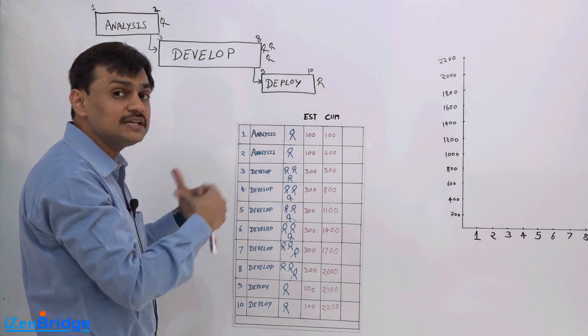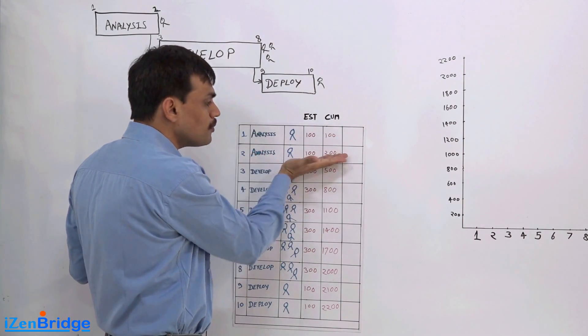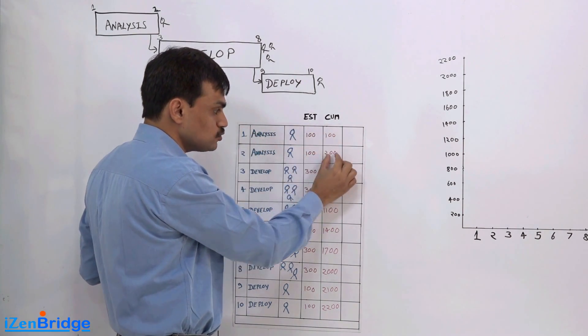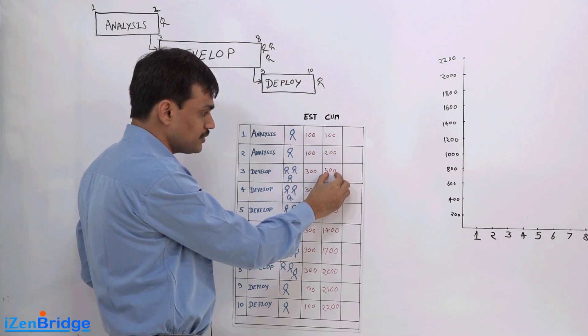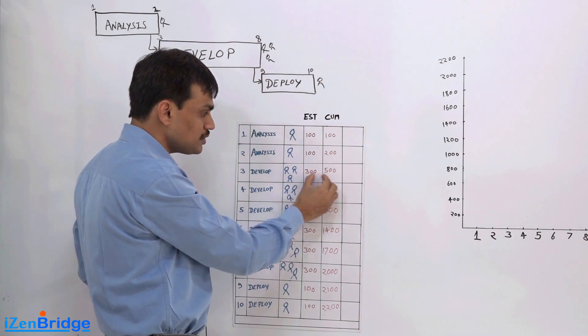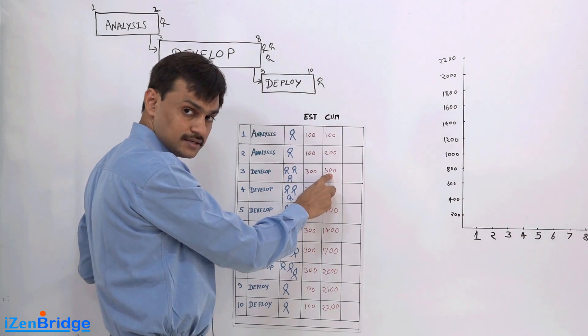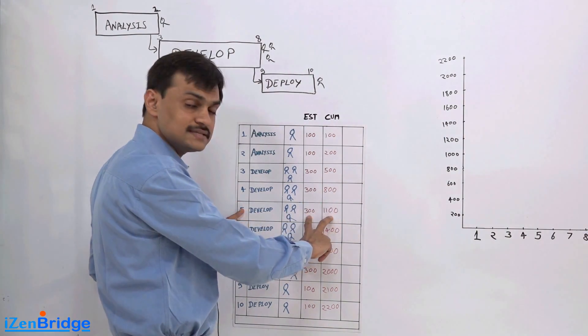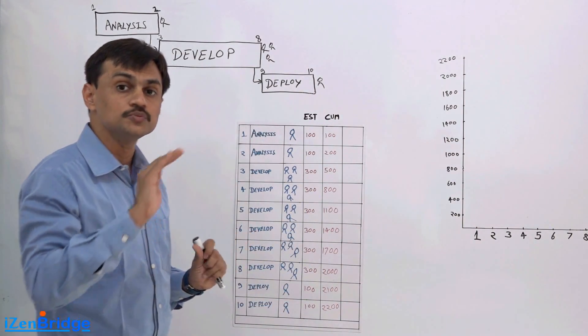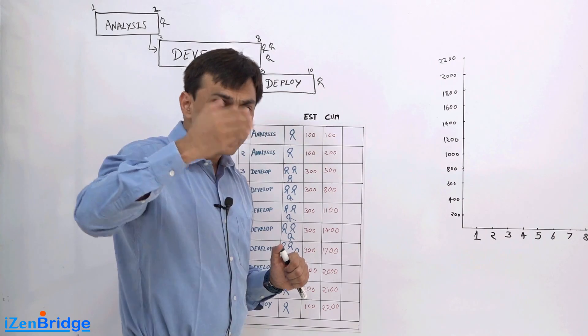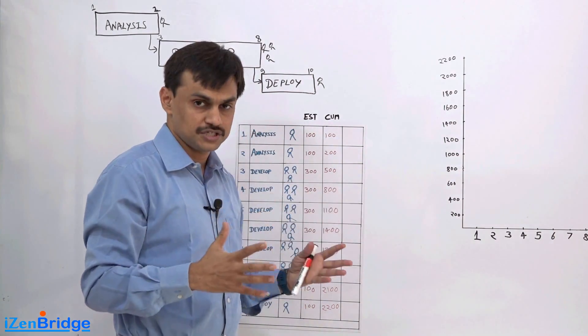Now if I put a cumulative number to it, which is simple, just keep finding out till day 2 how much money I have spent. Day 1 plus day 2 makes $200. Cumulatively by day 3 I have spent $500 because 200 plus 300 makes 500. By day 4, 500 plus 300 makes 800. Day 5, 500 plus 300 makes 1100. This particular column is primarily showing the cumulative money by a given point of time, how much money I would have spent because we are working on the budgeting part of it.